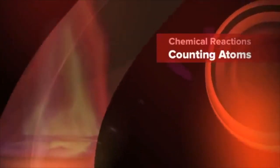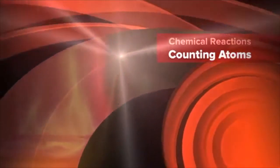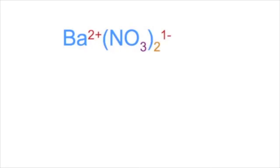Chapter 5, Chemical Reactions: Counting Atoms. The rules for determining the number of atoms in a chemical formula are the same, regardless of the type or size of the compound or molecule.